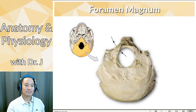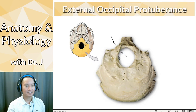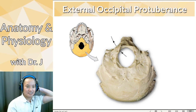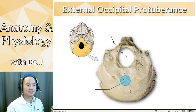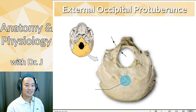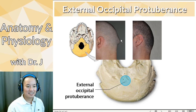The foramen magnum — 'magnum' refers to something very big — is that large hole in the base of your skull. And then there's the external occipital protuberance. Some people have more prominent ones than others, but you can feel it at the center of the back of your head — a little bump compared to the rest of your skull. This is the external occipital protuberance, and because it's a bump, things attach to it — connective tissue and muscles. This image shows a more extreme example from a plastic surgery journal where someone had a very prominent external occipital protuberance and had it shaved down.